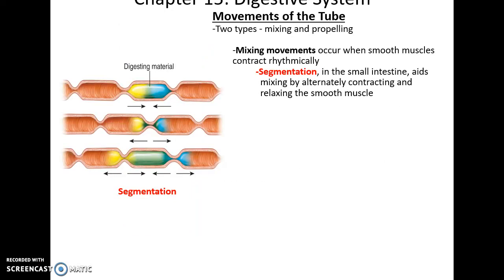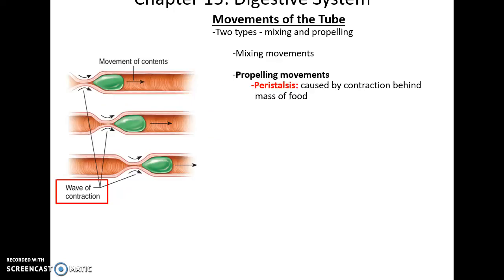There are two types of movement that occur in the alimentary canal. Mixing movement allows materials to get mixed further — segmentation in the small intestine, where it squeezes rhythmically back and forth causing materials to mix more thoroughly. Propelling movements, or peristalsis, involve a contraction behind the food that acts as a wave, pushing it along the canal.